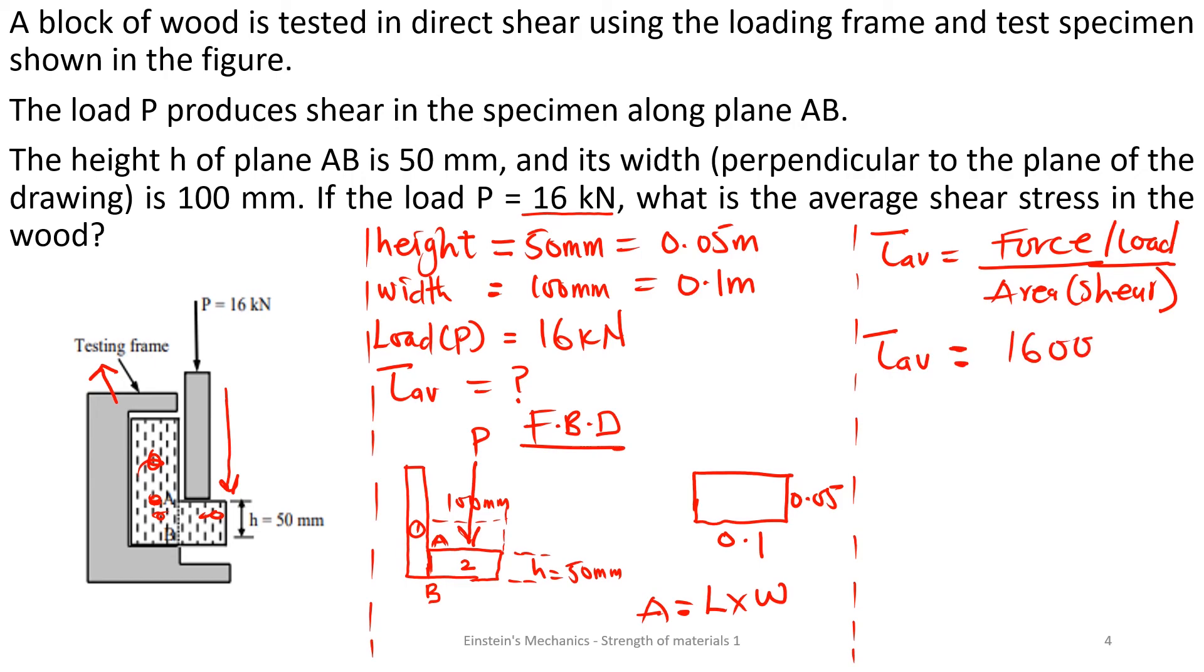The length 0.1 times the width 0.05. And with this, we are going to get our shear average to be 3.2 mega Pascal, or 3.2 mega Newton per meter squared. So this is our final answer.